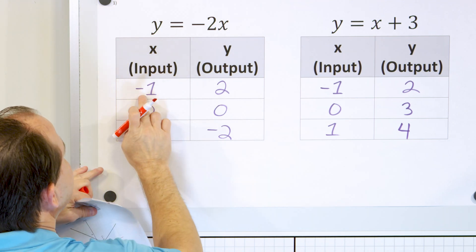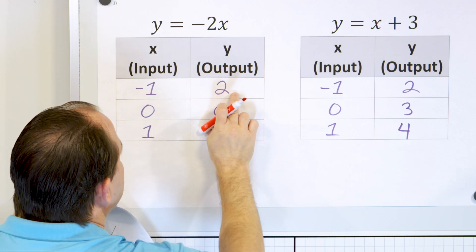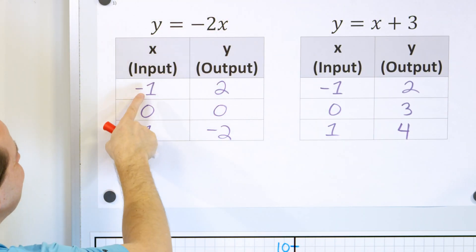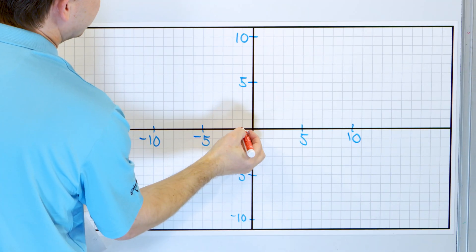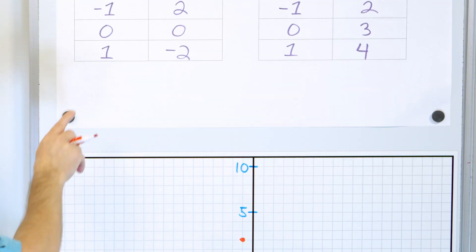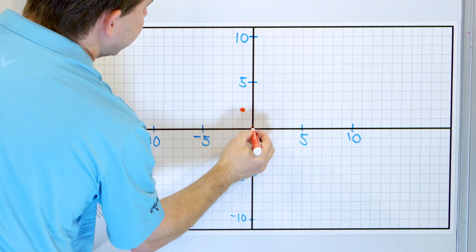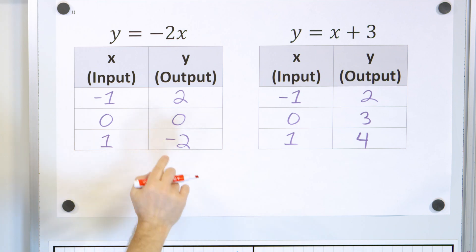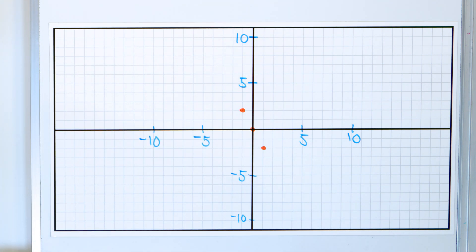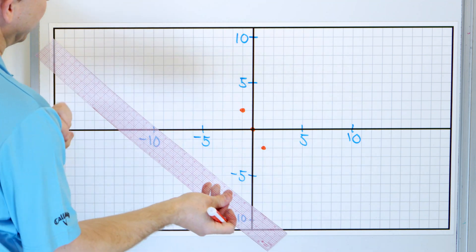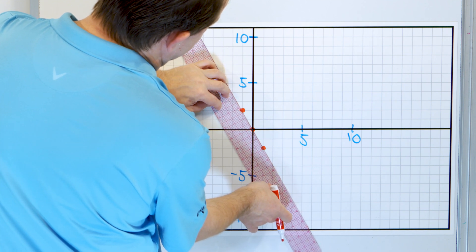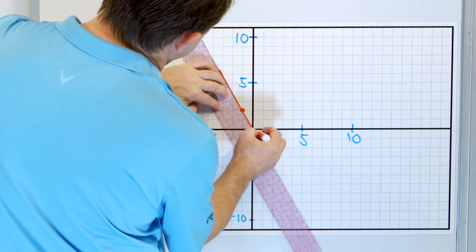Let's take a look at the first line. The first point is negative 1 comma positive 2 — we go left 1 and up 2. The next point is 0 comma 0, right at the origin. And then positive 1 comma negative 2 is right here. You can see that these three dots do indeed form a line. Let's just draw it right now — here is line number 1. I do recommend using a straight edge to draw your lines.